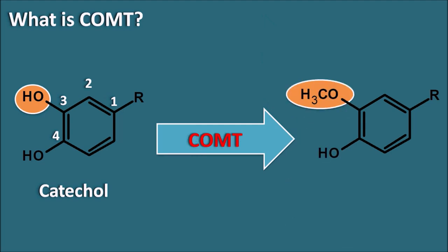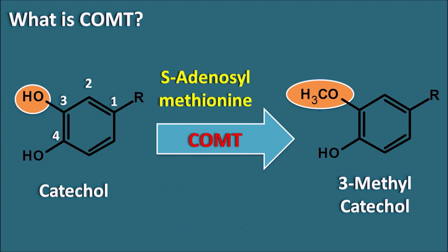COMT, catechol-O-methyltransferase enzyme, will convert the 3-OH group into a 3-methoxy group. In this way, this enzyme produces the metabolite 3-methyl catechol. In this metabolic reaction, the methyl group is transferred to the catechol, where this methyl group is donated by S-adenosylmethionine. By this, COMT can convert the catechol into a non-catechol.